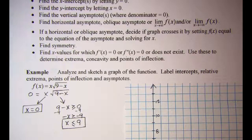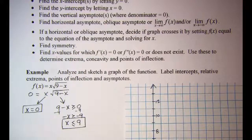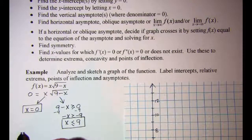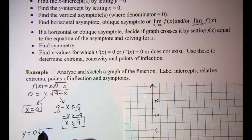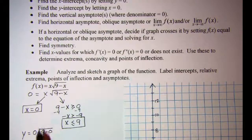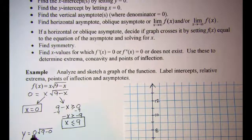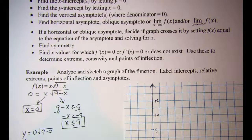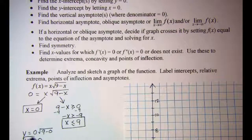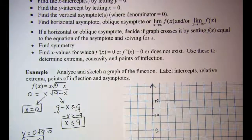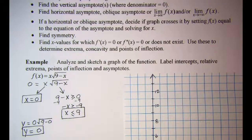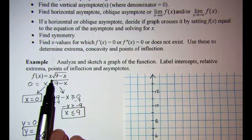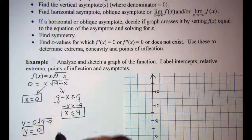Our next step is to find the y-intercept by letting x equals 0. So this is y equals 0 and we already have that plotted on the graph. If we look at symmetry, we have no symmetry.